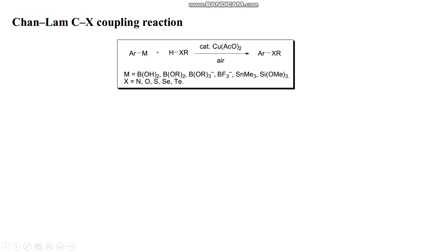The Chan-Lam coupling reaction is a reaction between aryl boronic acid with aryl amine in the presence of a copper complex to form an aryl secondary amine compound.